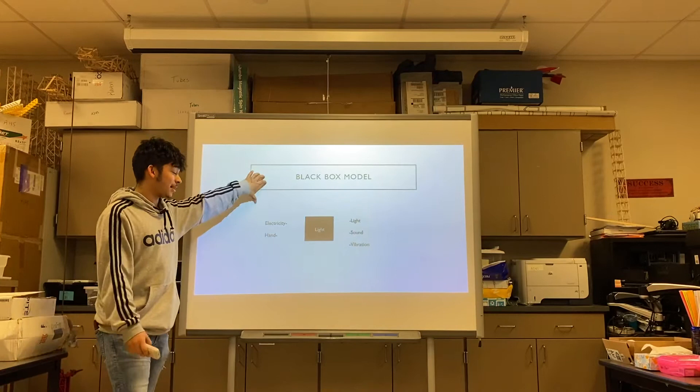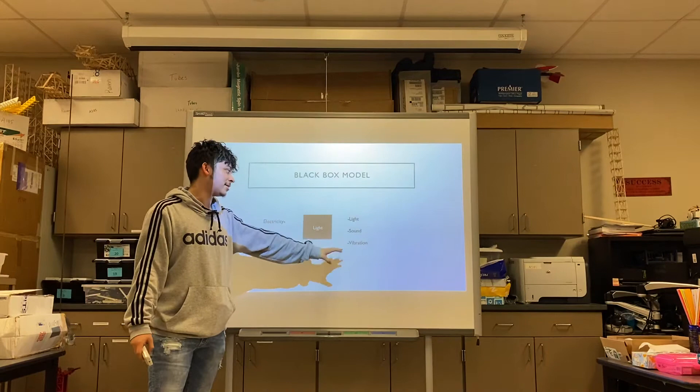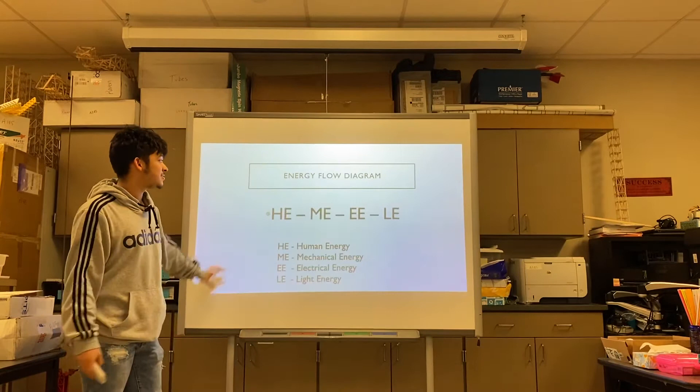This is the black box model. Some of the inputs to produce light was electricity and hand energy, which led to outputs like the light and sound and vibration from the flashlight.